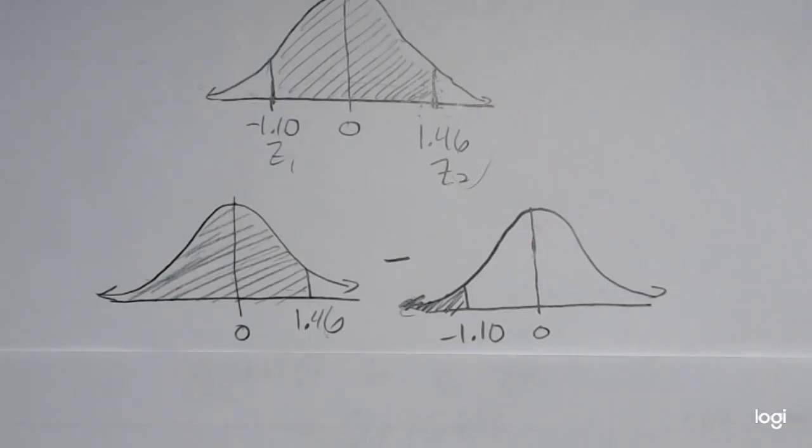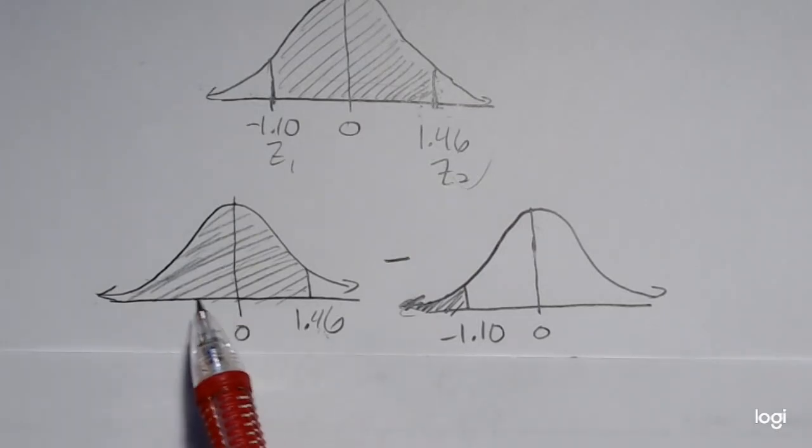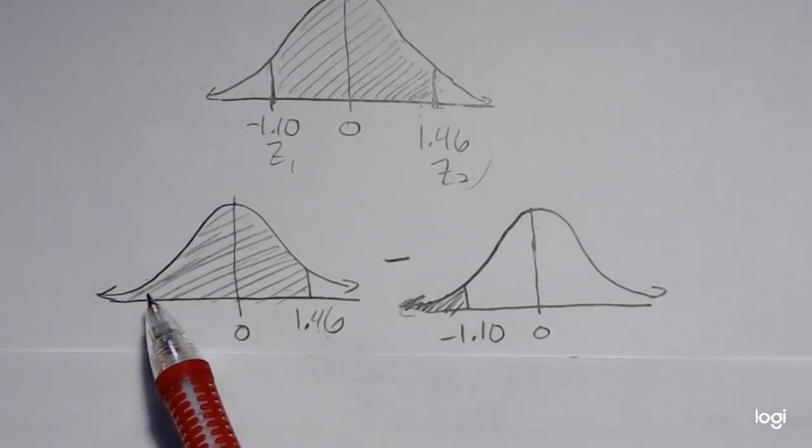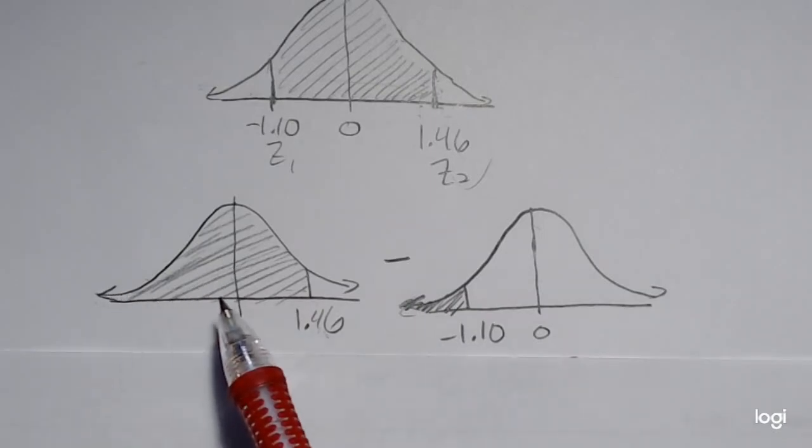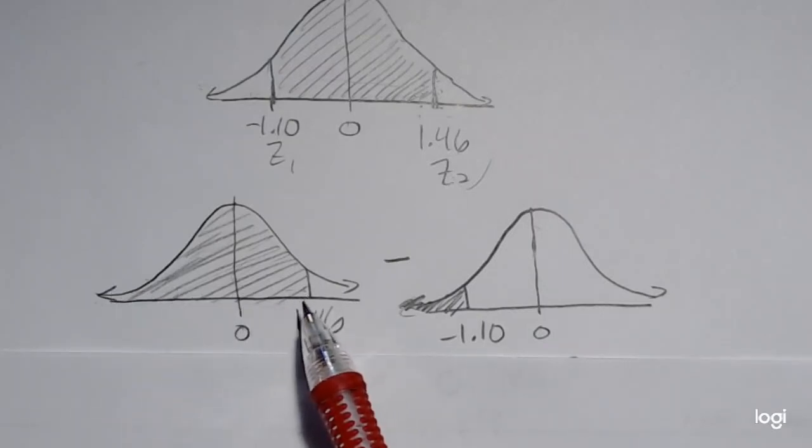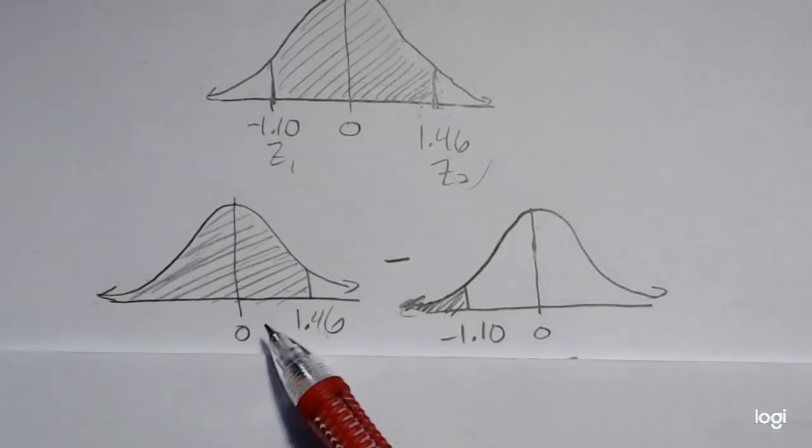Going to the standard normal table for this first larger area, I expect it to be greater than 0.5 because I've shaded over half of this bell curve. Half of the area is from negative infinity up to 0, so it's going to be half the area plus this little bit more. I'm not expecting an area less than 0.5 or 50% for this one.